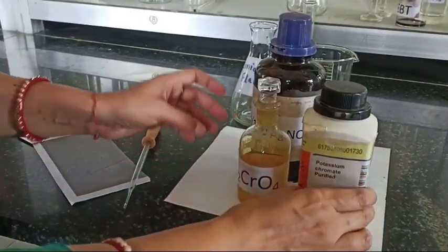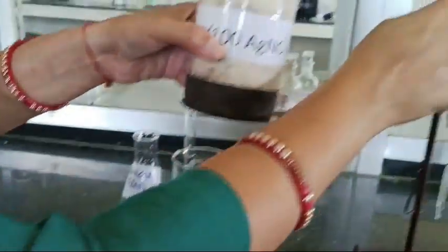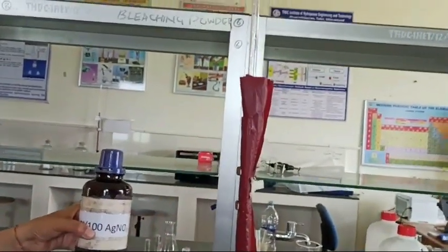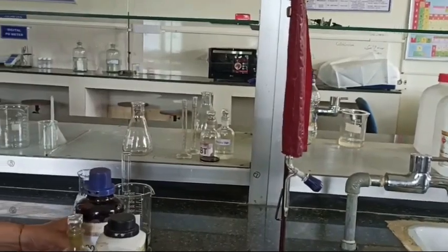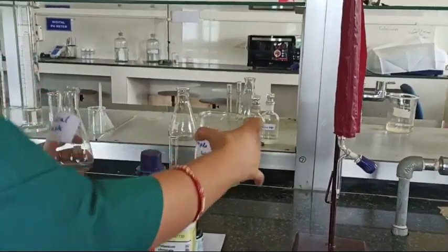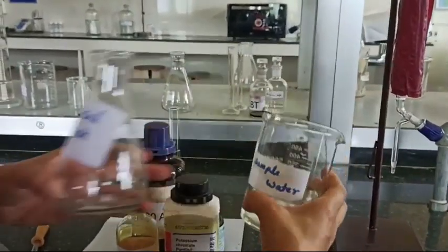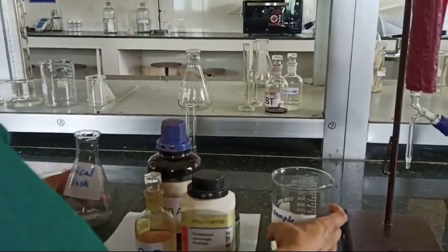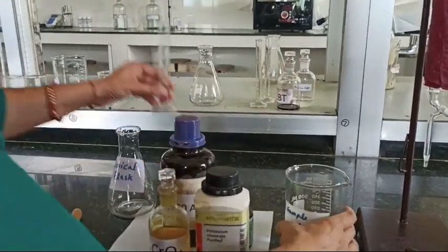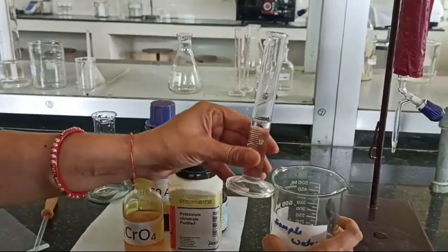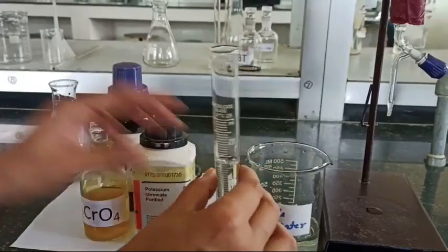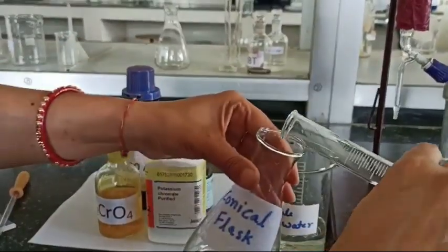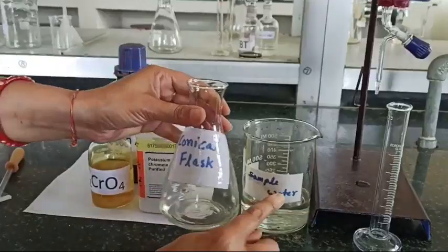K2CrO4 is used as an indicator here in this experiment and this N by 100 AgNO3 is used for titration. This burette is also covered with the colored paper. Here is the sample water. Sample water is nothing but it is containing NaCl solution. So I have measured 15 ml of this sample water which is containing unknown concentration of NaCl solution.